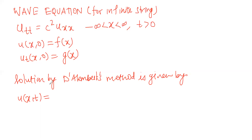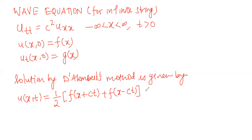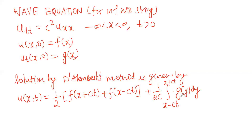The solution by D'Alembert's method is given by: u(x, t) = (1/2)[f(x + ct) + f(x − ct)] + (1/2c) times the integral from x − ct to x + ct of g(y) dy. Here I am replacing the variable — g is a function of x but since I am substituting the integration variable, I write g(y) dy.